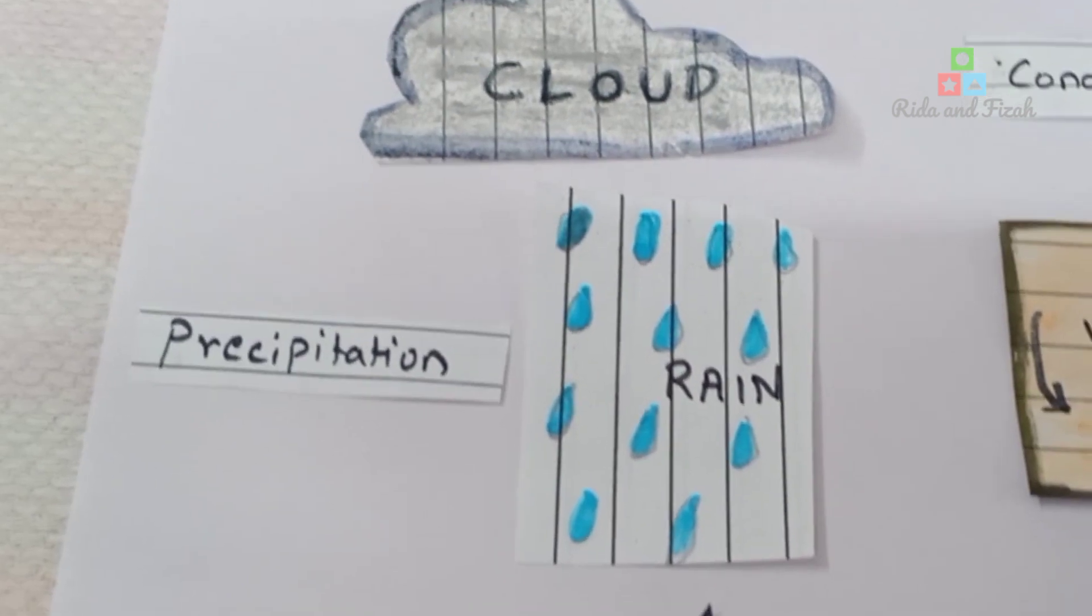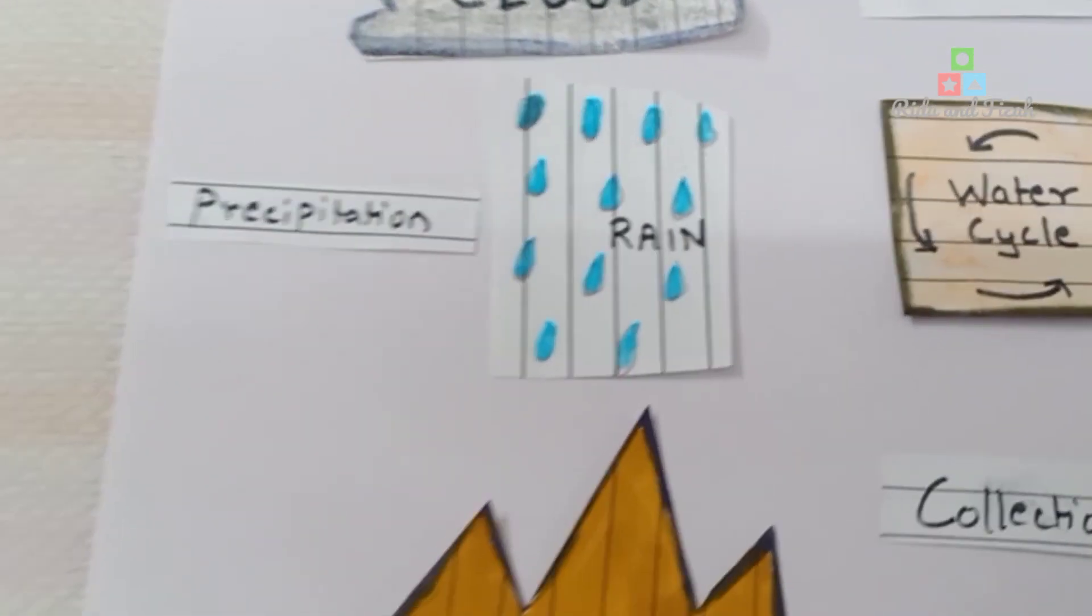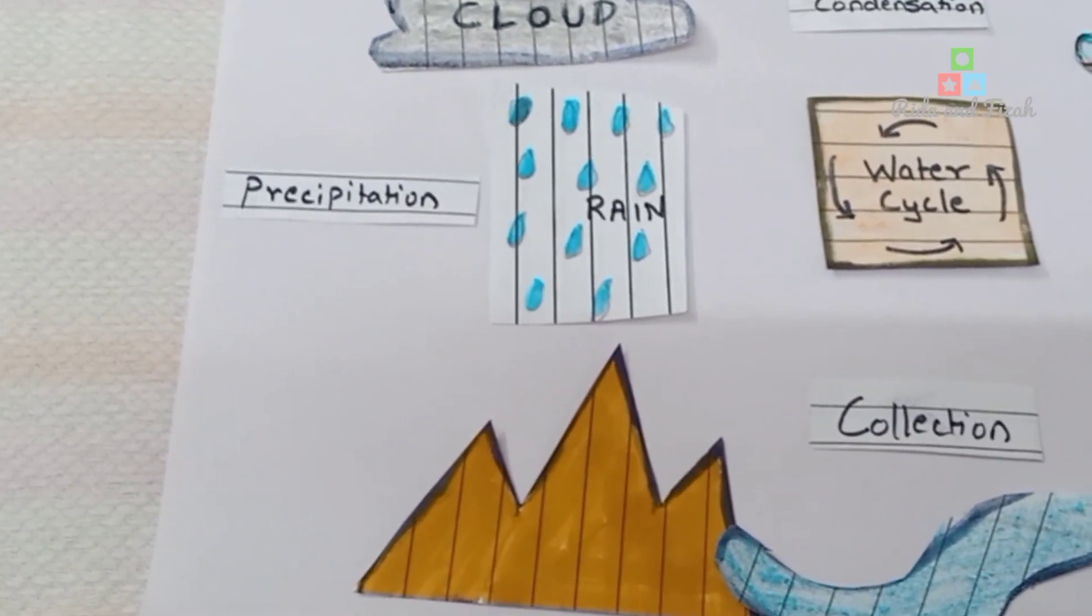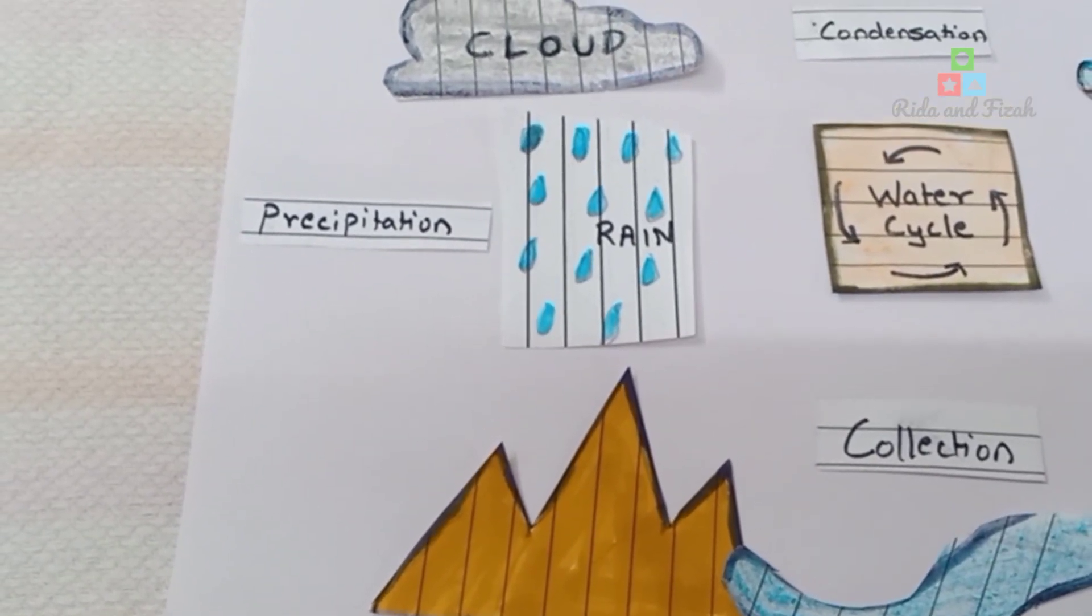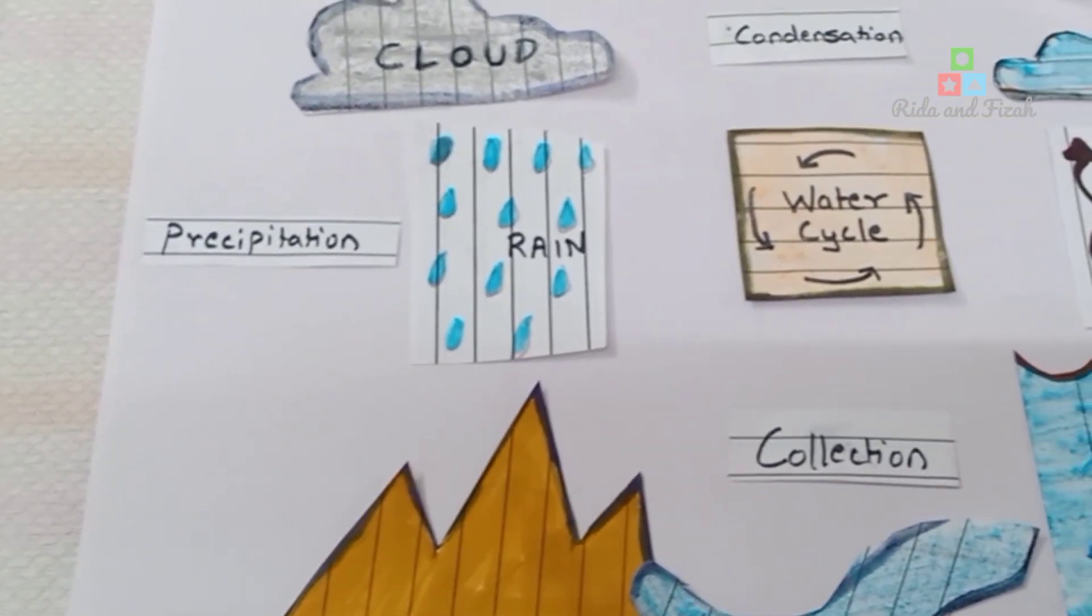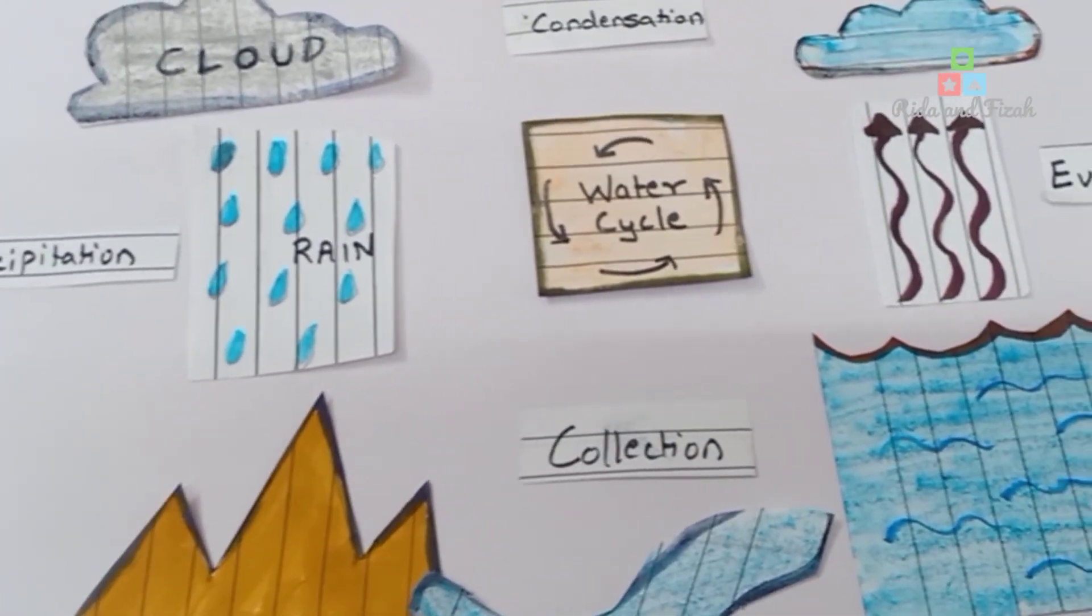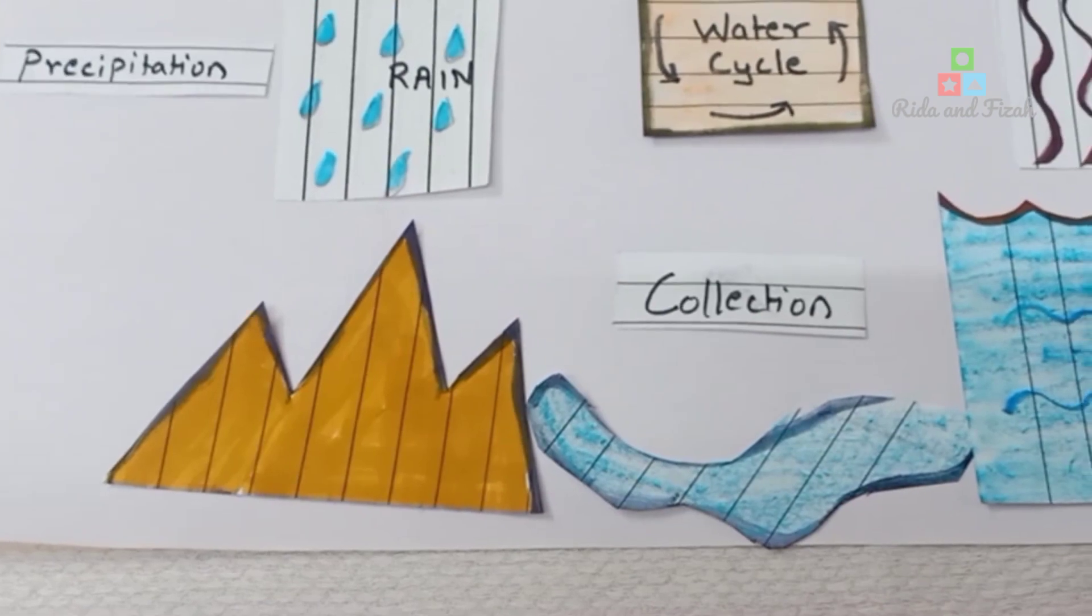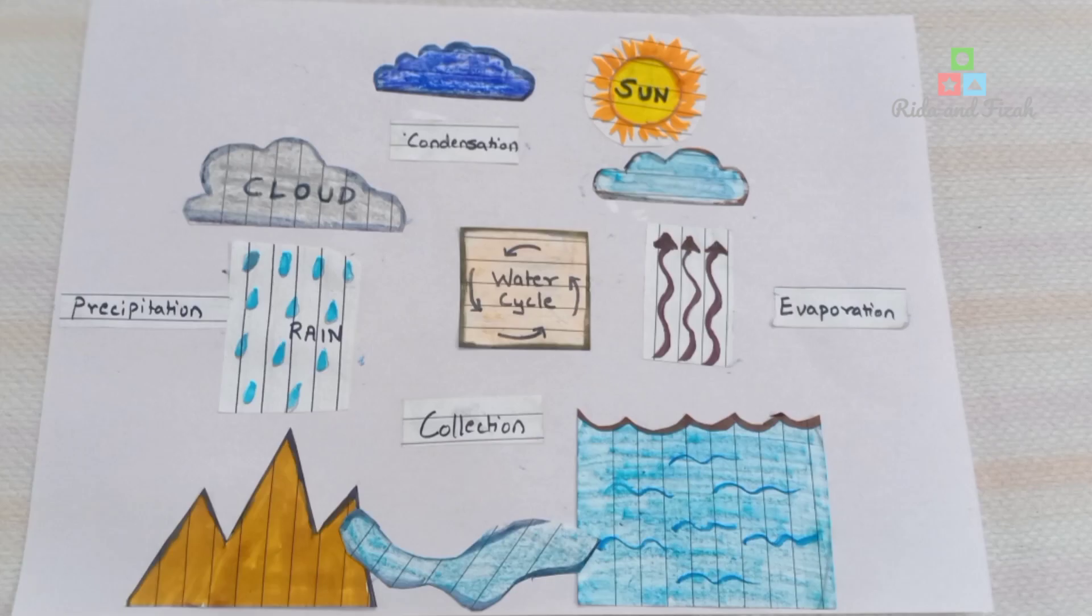The clouds come down in the form of rain, called precipitation. The water that falls on land gets collected in seas or lakes, called collection.